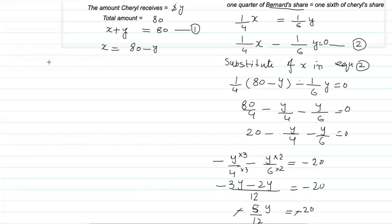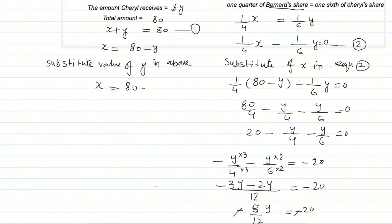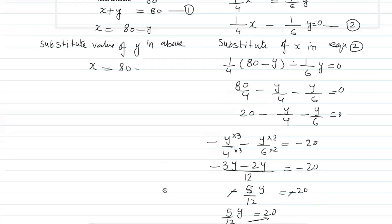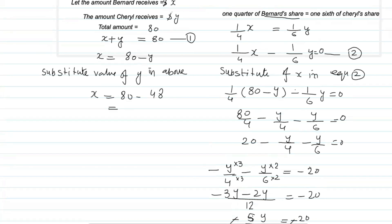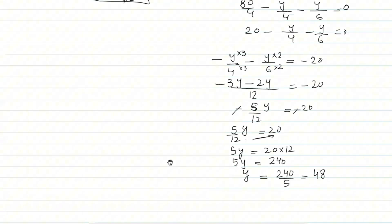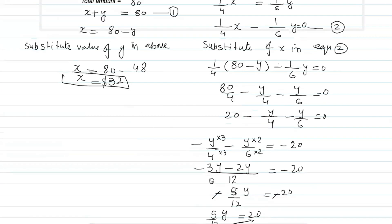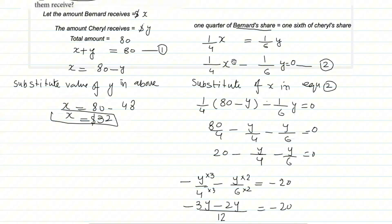Now to calculate x, we substitute the value of y back into the first equation: x = 80 − y = 80 − 48 = 32. So Bernard received x = $32 and Cheryl received y = $48. These are our answers: $32 and $48.